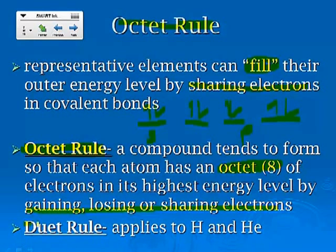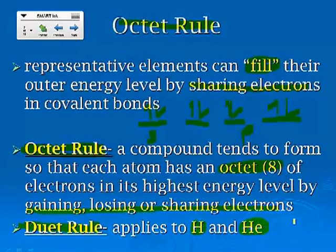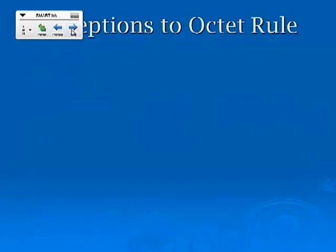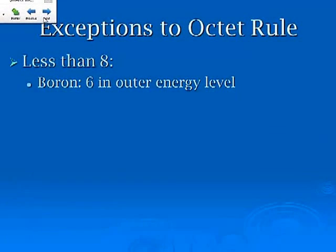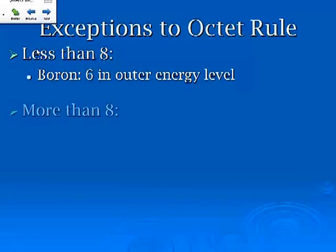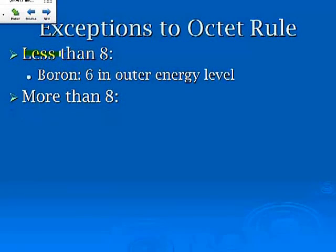Now, there are a couple of exceptions. The duet rule is only going to apply to helium and hydrogen, and that's the fact that they only want two to make them happy because it lowers their energy. For less than eight, the only exception we're familiar with is boron. Boron only needs six in its outer energy shell.